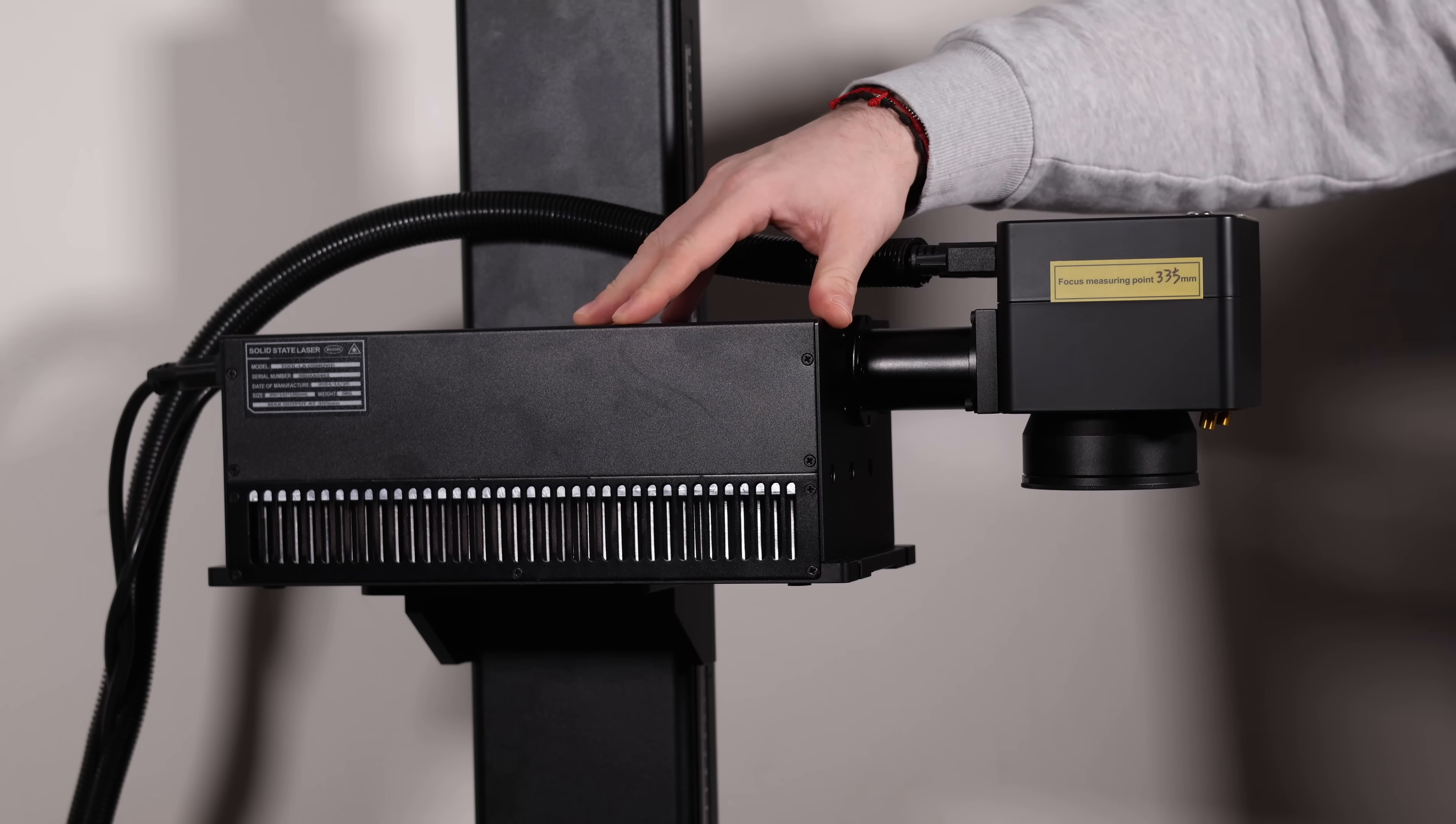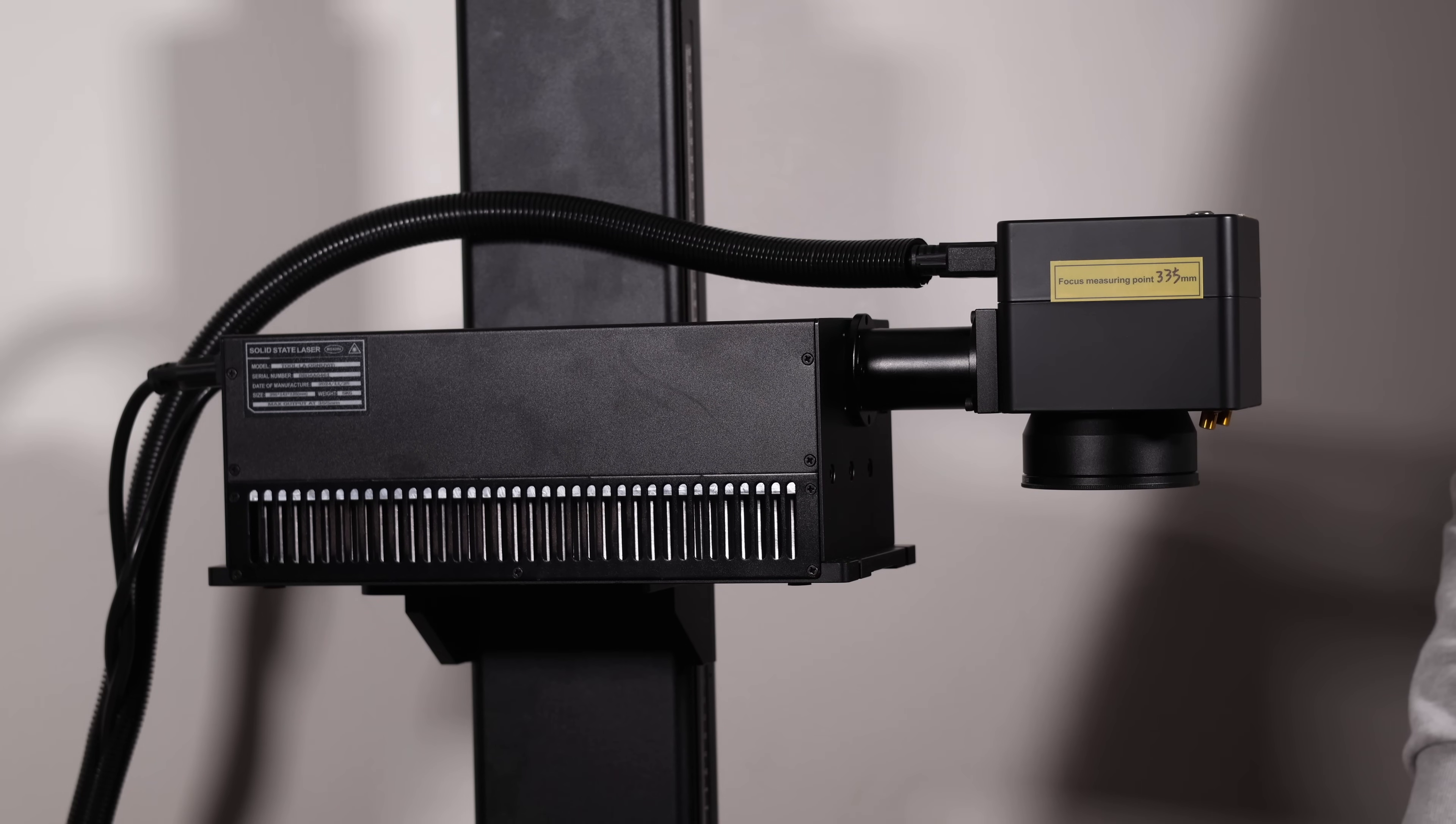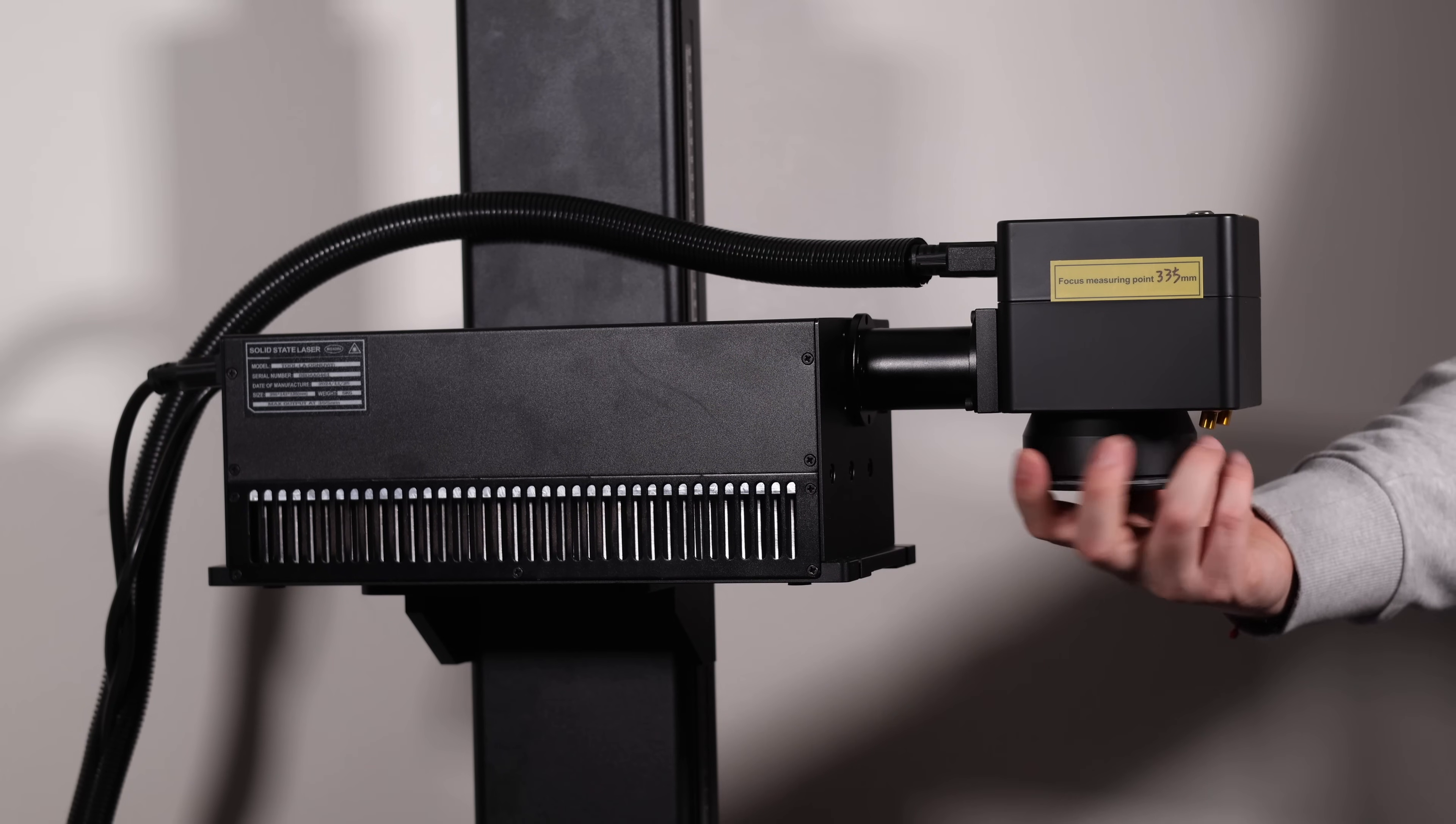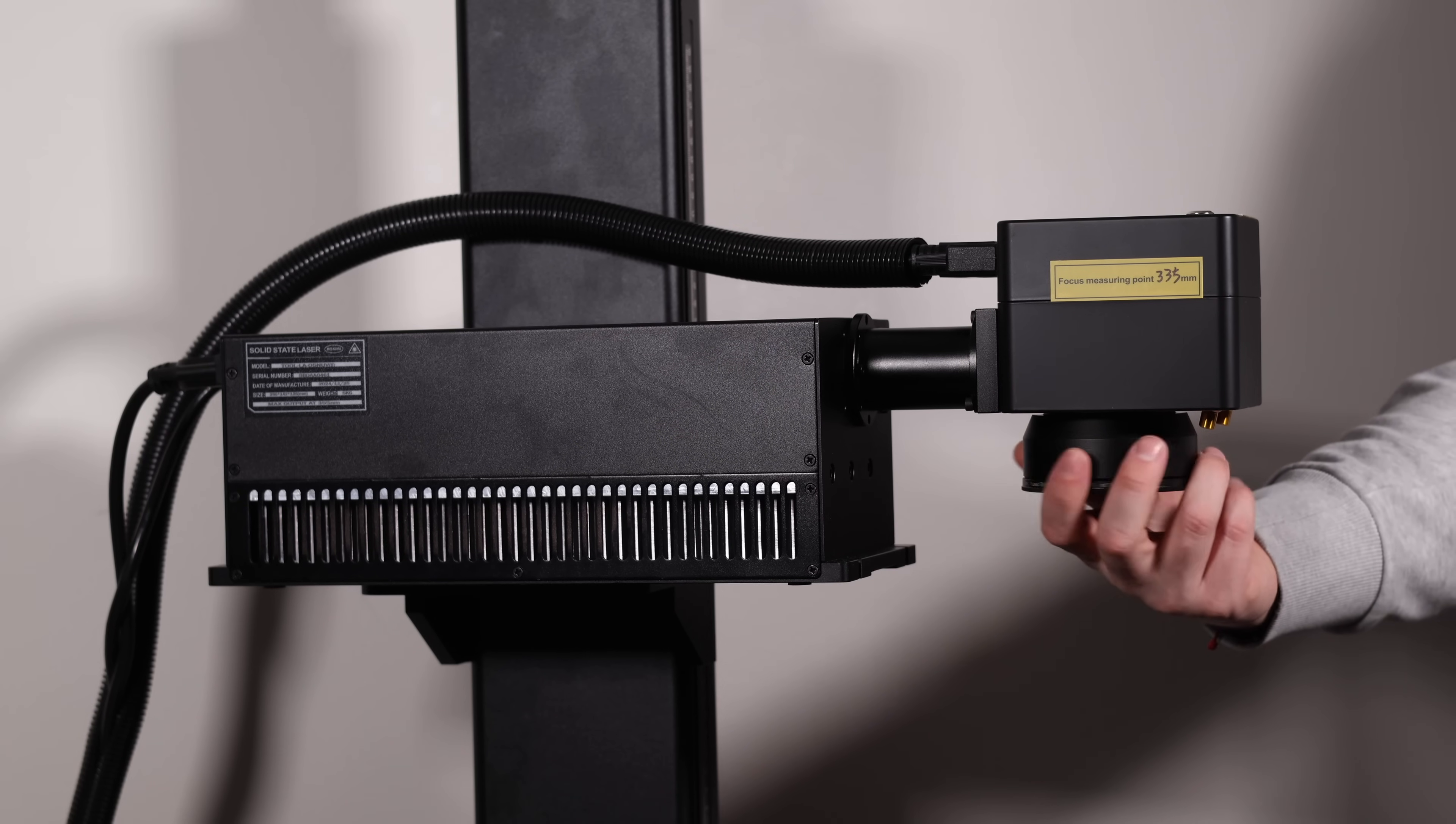Unlike the CommMarker B4, the Omni uses a UV laser, and the key difference is that the laser is generated directly in the laser head itself rather than in the base. This design makes the laser head heavier, requiring the sturdier arm we talked about earlier.